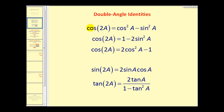The first thing to notice is there are three double angle identities for cosine. Cosine of two A is equal to cosine squared A minus sine squared A, or one minus two sine squared A, or two cosine squared A minus one. All of these are equal to cosine of two A. For sine and tangent, there is only one double angle identity each: sine of two A equals two times sine A times cosine A, and tangent of two A equals two times tangent A over one minus tangent squared A.